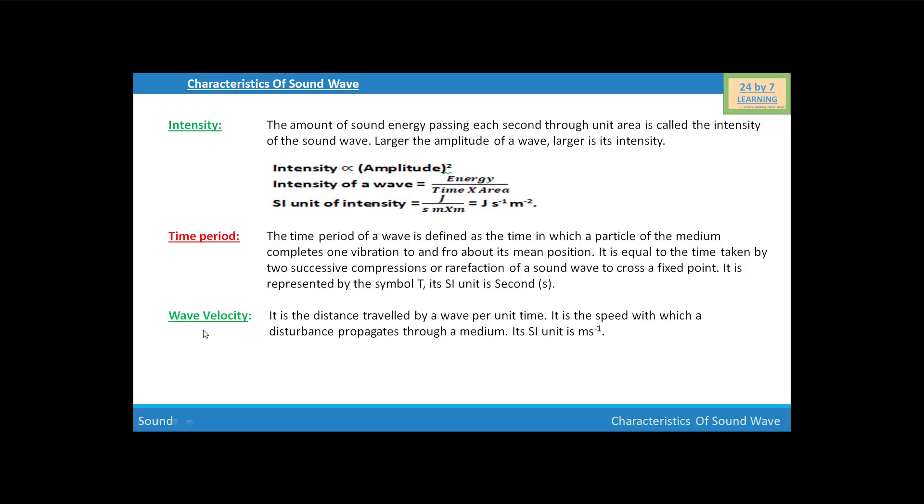Next quantity is wave velocity. Wave velocity is the distance traveled by a wave per unit time. It is the speed with which a disturbance propagates through a medium and its SI unit is meter per second.